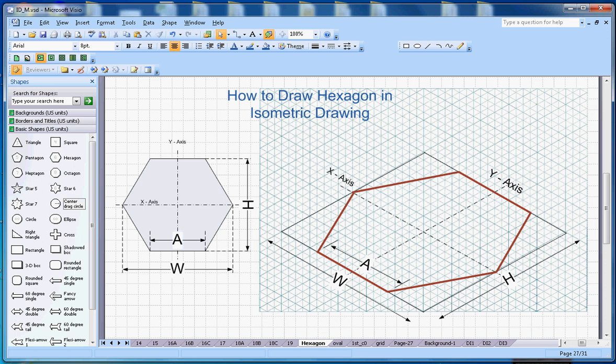This video is about how to draw a hexagon in isometric drawing. To draw the hexagon, first you need the real hexagon here that I have drawn.